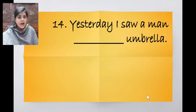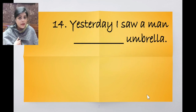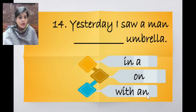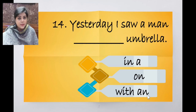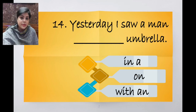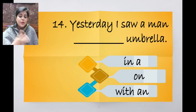Yesterday, I saw a man dash umbrella. Options: in an umbrella, on an umbrella, with an umbrella. You can't see a man in or on an umbrella, so the correct answer is with an umbrella. Yesterday, I saw a man with an umbrella.